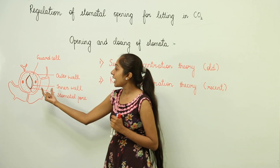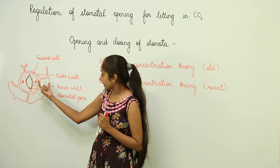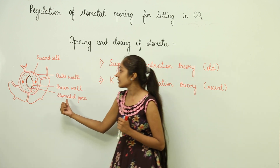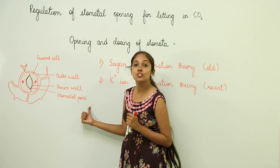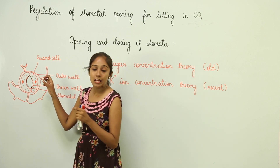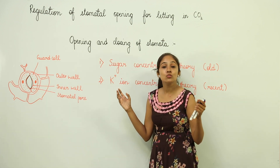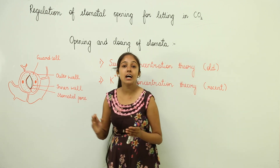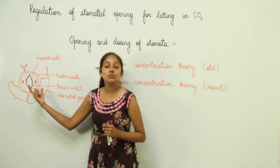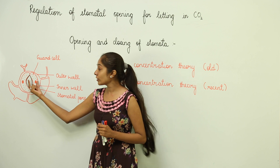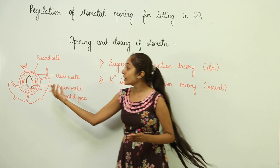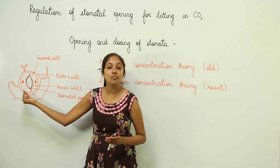Before that, just look at the structure of stomata. In case of stomata, we have a pair of guard cells. They have a thick inner wall and a thin outer wall, and in the center we have a stomatal pore. If there is a hypertonic situation, water is going to enter inside the guard cells, causing the guard cells to swell up, leading to the opening of the pore. When water is lost from the guard cells and moves out, they are going to shrink, leading to the closing of the stomatal pore.